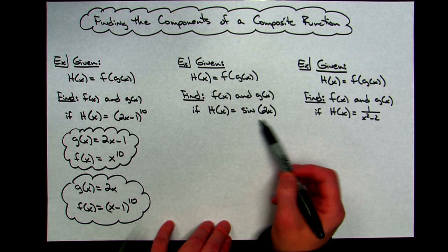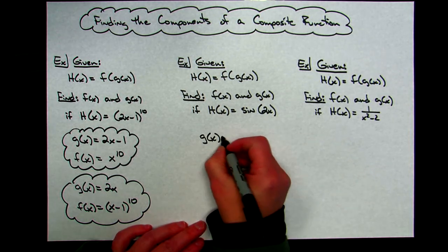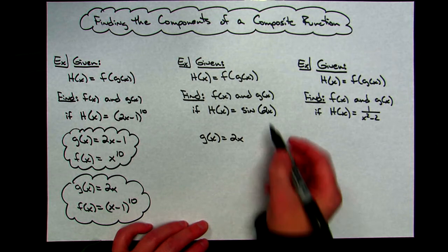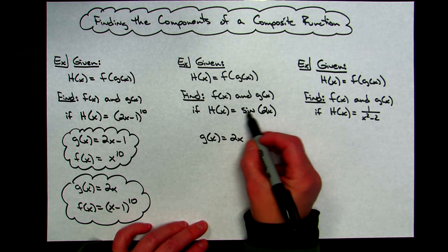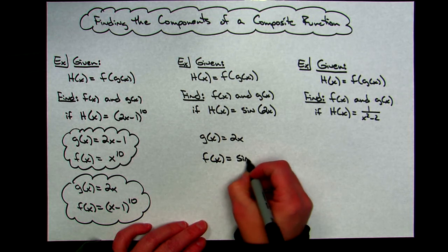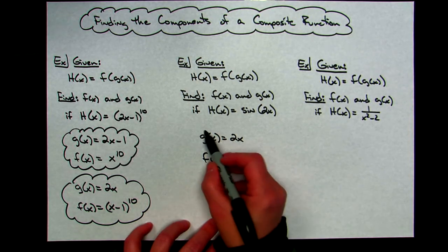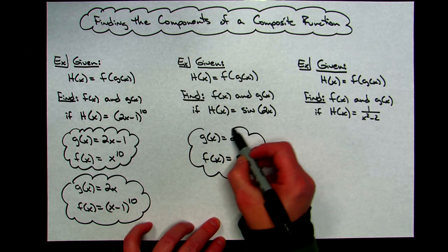The inside function is that 2x. So that means my g of x is going to be 2x. Well, if that's the inside function, the outside function is that trig function. So then f of x is just going to be sine x, because I would have taken it and plugged it in there. So there's one possible answer for that one.